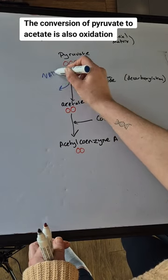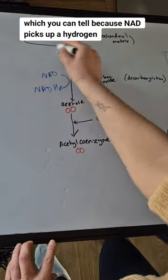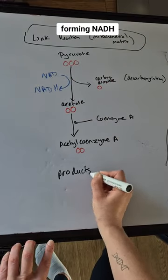The conversion of pyruvate to acetate is also oxidation, which you can tell because NAD picks up a hydrogen forming NADH.